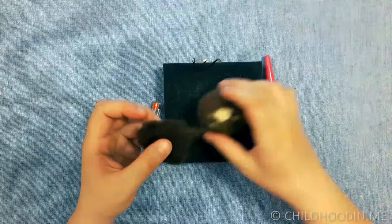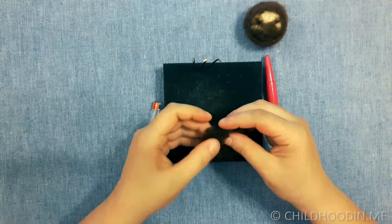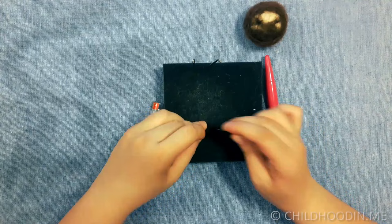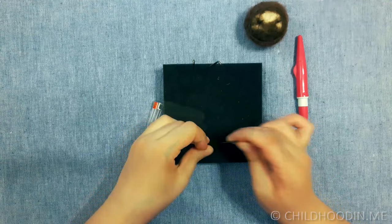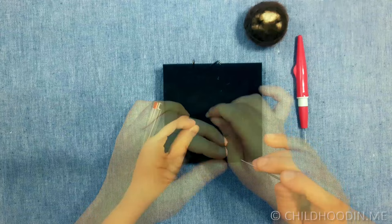Needle felt the beak separately on the mat. Use the darkest brown wool for the beak. Form a triangular shape. Leave one end of the beak loose to attach it to the head, but make sure the rest of the beak is very firm. You can try to make the beak crooked.